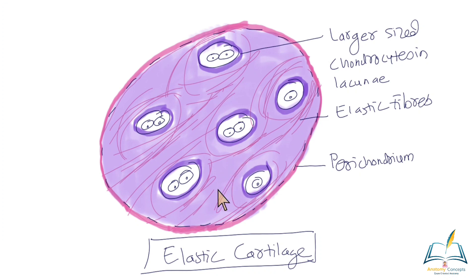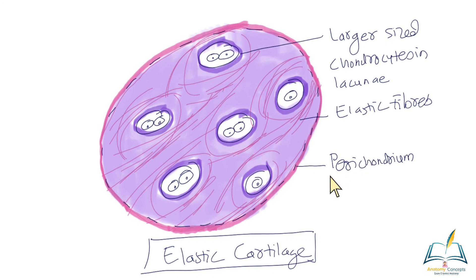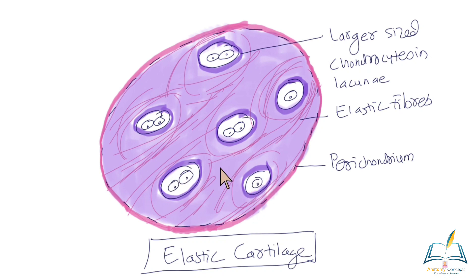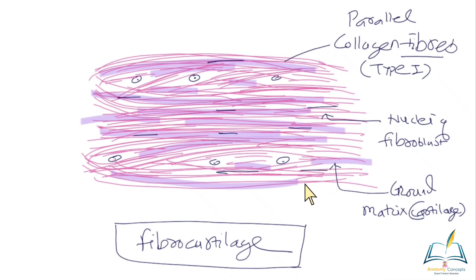The identifying feature of elastic cartilage is the presence of thin elastic fibers, making the ground matrix comparatively eosinophilic — more pink in nature. These special elastic fibers give this cartilage its elasticity. You can also observe perichondrium surrounding it, again with a cellular layer and a fibrous layer. The fibrous layer is the connective tissue layer, and the cellular layer is the regenerative layer from which chondro-progenitor cells give rise to the chondrocytes.